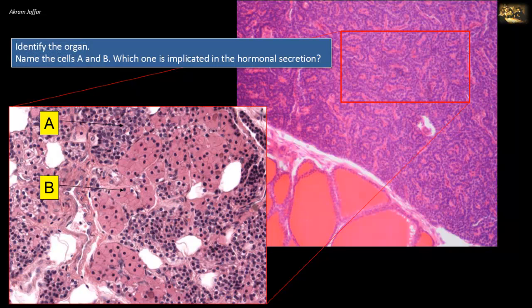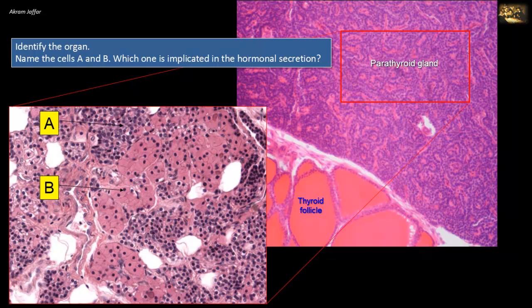Identify the organ, name the cells A and B, and which one is implicated in hormonal secretion. The right section gives the clue: in the lower left-hand corner you can see thyroid follicles, so the adjacent organ is the parathyroid gland. The parathyroid gland contains chief cells, also called principal cells, represented in A. They are small cells with a round, centrally located nucleus, and they synthesize and secrete the parathyroid hormone.